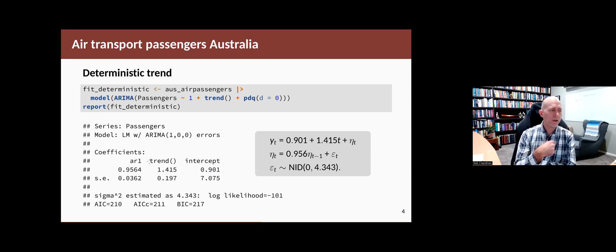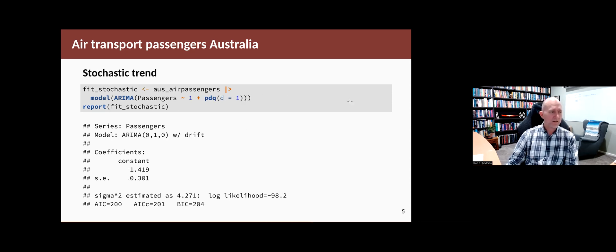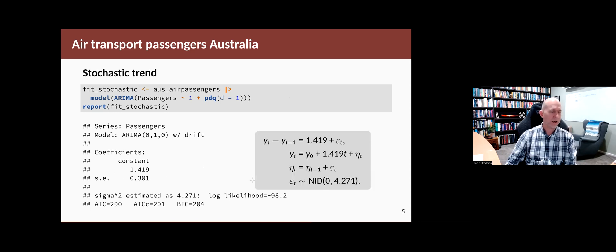If we do it in a stochastic way, we just have to change the d to a 1. We fit it and we put in a constant for the drift term, which is the slope of the trend function. So you write it like that: tilde 1 plus PDQ, d equals 1. And we get this output down here with only the one parameter. But if we write out the full equation, we can see what's going on. The differenced data equals the constant plus an error.